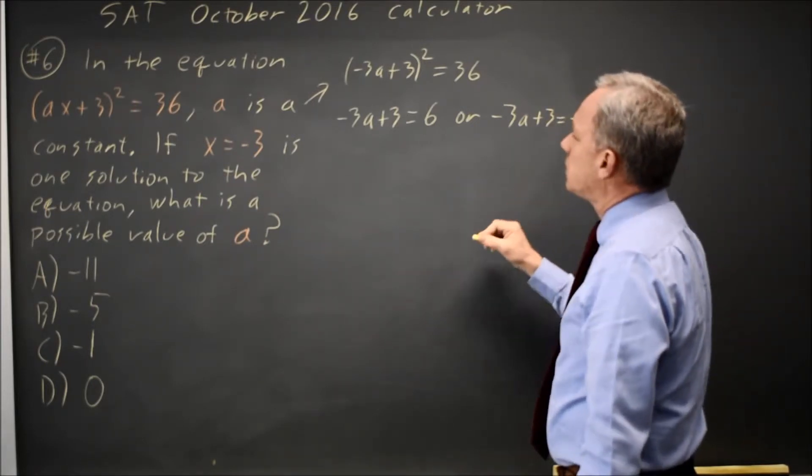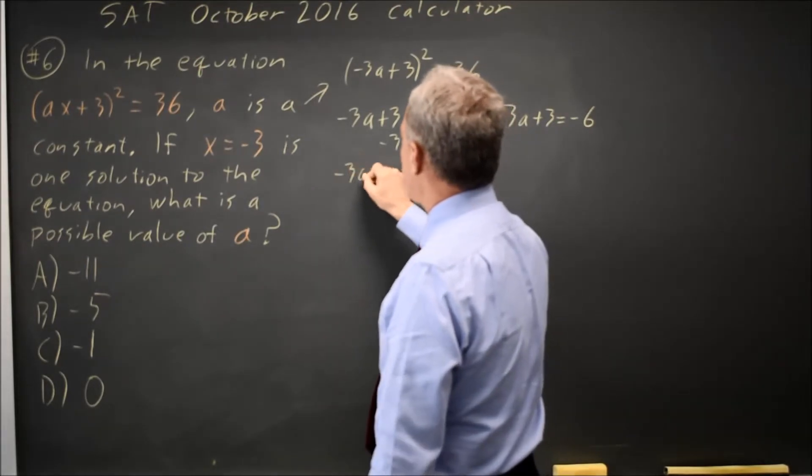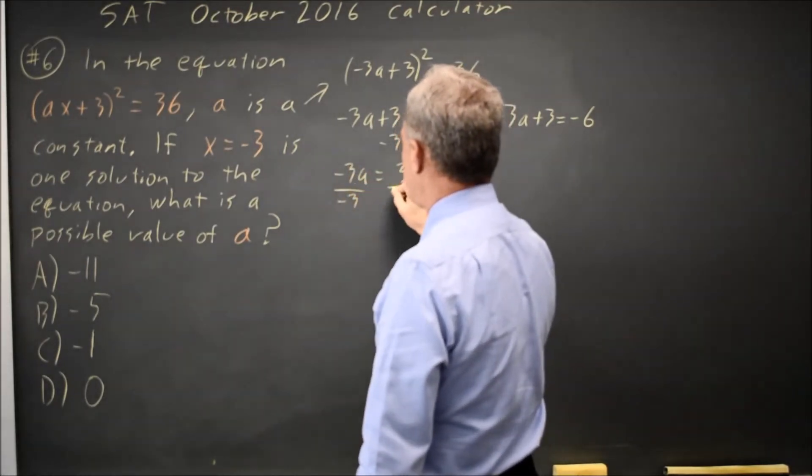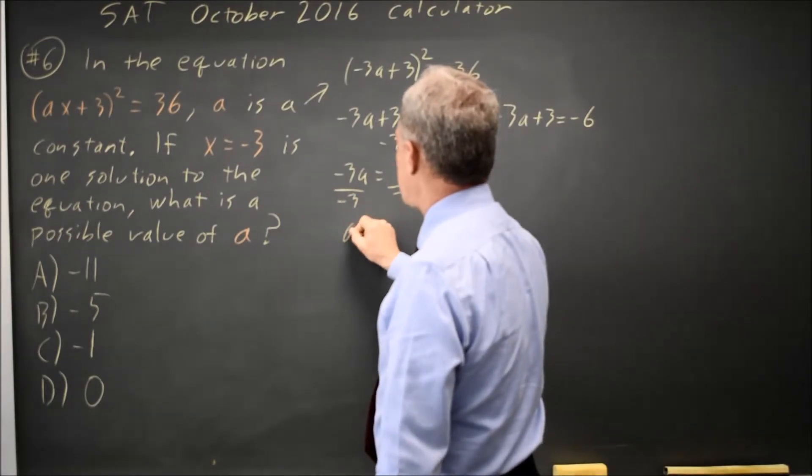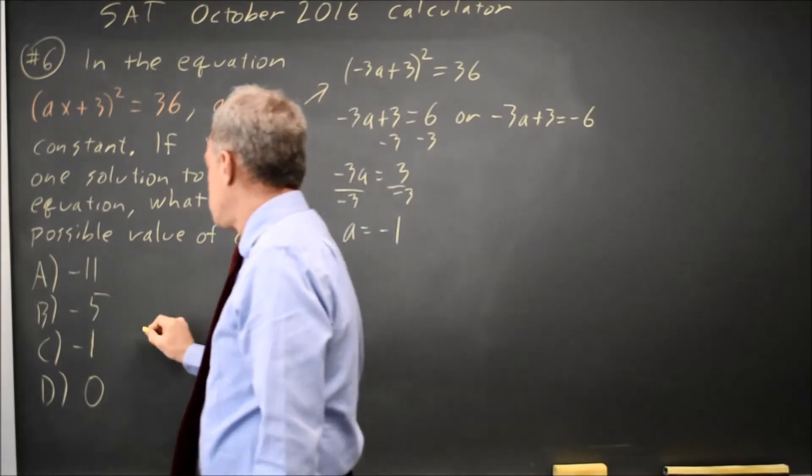Subtracting 3 from both sides, negative 3a equals 3. Divide by negative 3 and a equals negative 1, which is choice C.